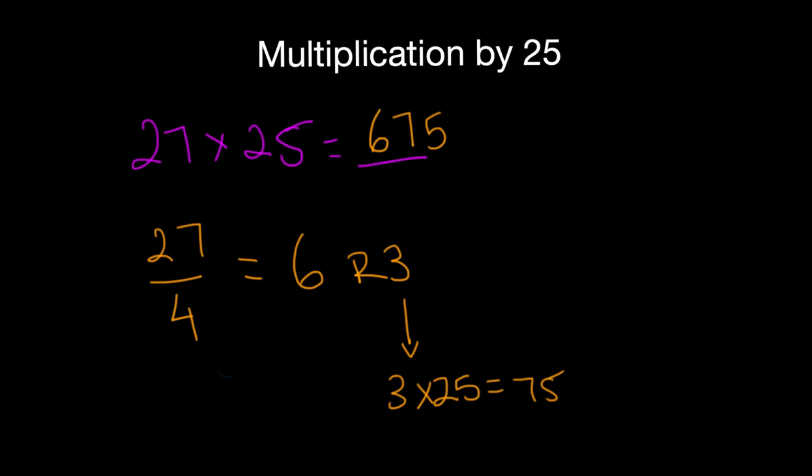So how did we come up with this trick? Why does this trick always work? The reason is because 25 is really just equal to 100 divided by 4. So that's really what you're multiplying by. You're multiplying 27 times 100 over 4.